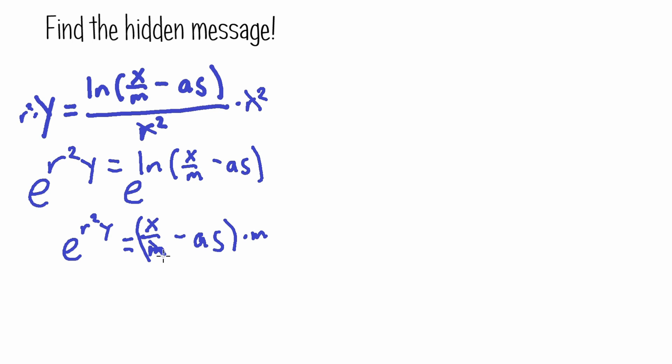And whatever you do on one side you need to do to the other side also. But however, here we have two terms that are not being multiplied together, so we need to multiply both terms by m. Okay, so I'm going to write on the top here: m times e to the r squared y.